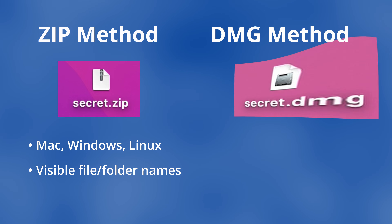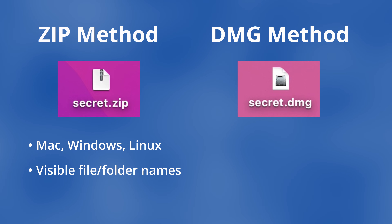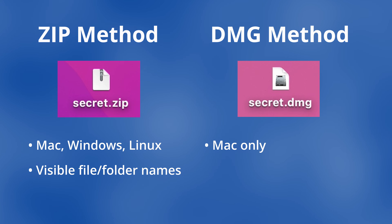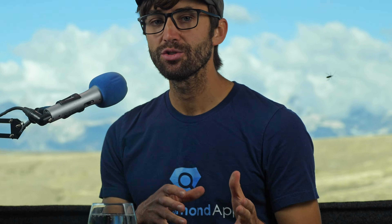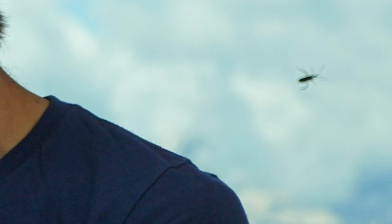The second option creates a DMG file that will only work with Mac, but all file and folder names are hidden. I'll walk you through password protecting each way, and let's start out with zip.